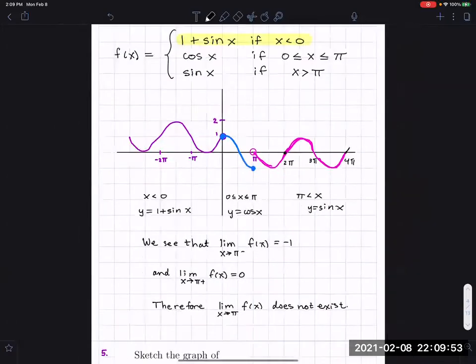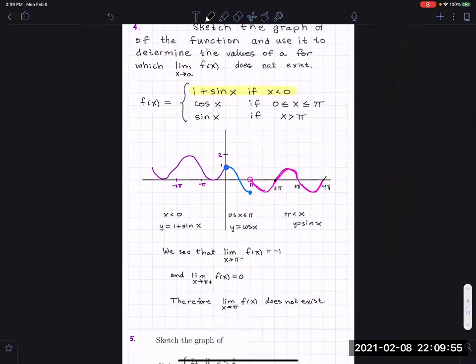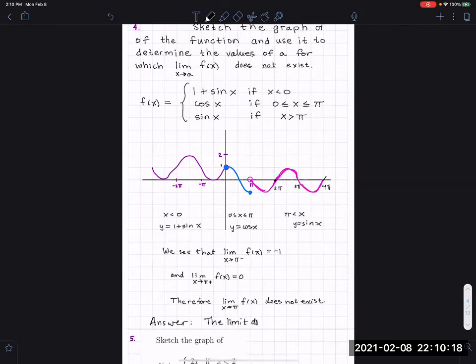So what was the question? The question was sketch the graph and find where the limit does not exist. So the answer, the final answer, x equals pi. I'll write it in a whole sentence. The limit does not exist at x equals pi.